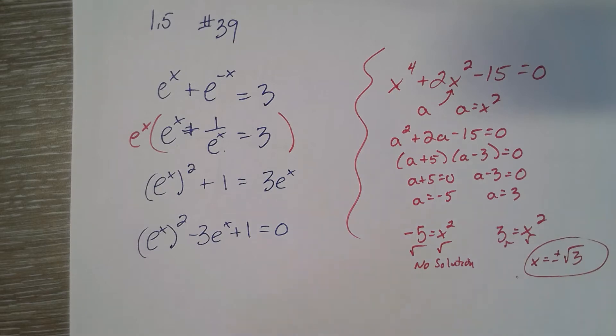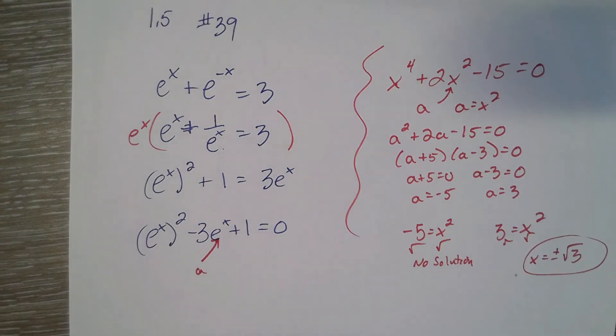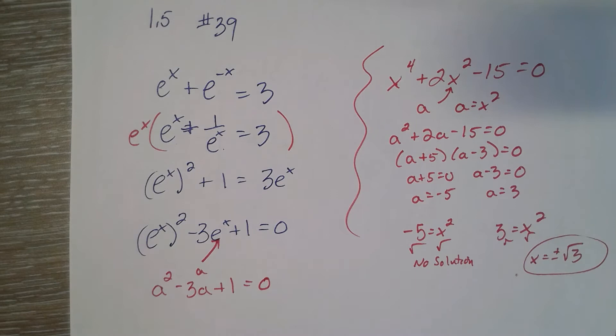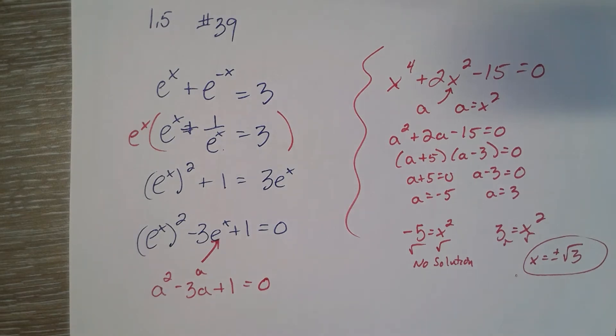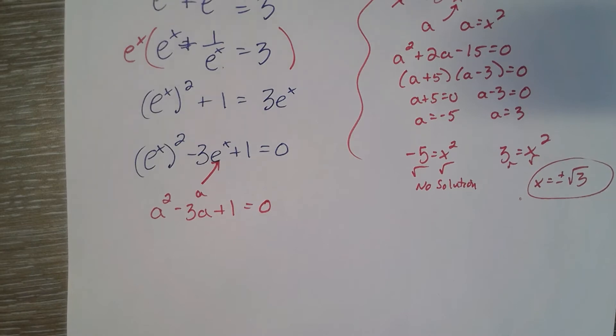This is a quadratic type. Where again, this is your a. So it would be a squared minus 3a plus 1 equals 0. The good news is it's now in a quadratic form. The bad news is it's not factorable.